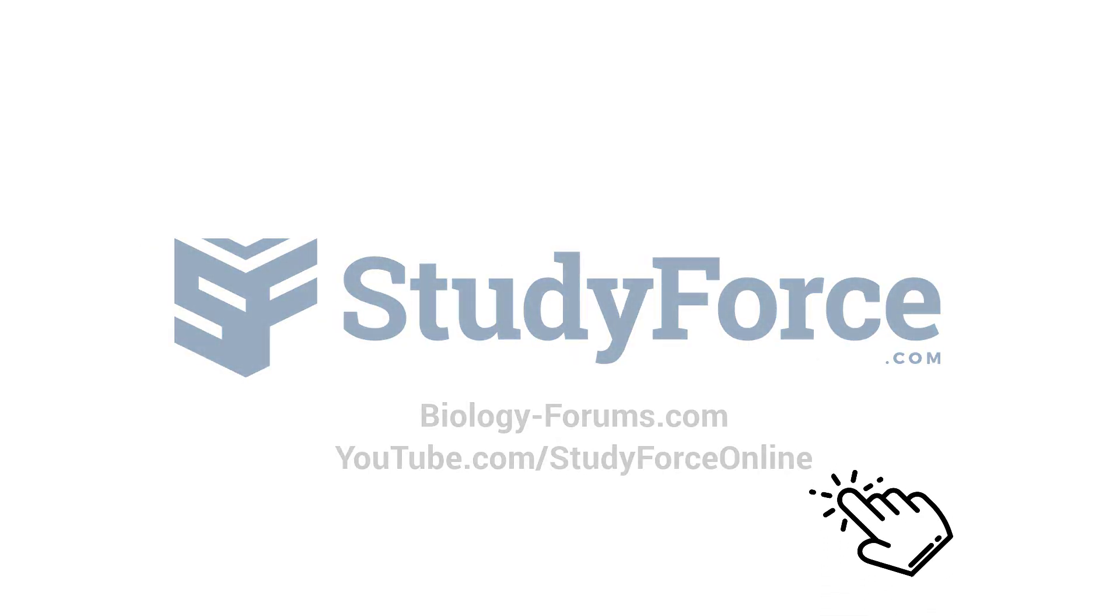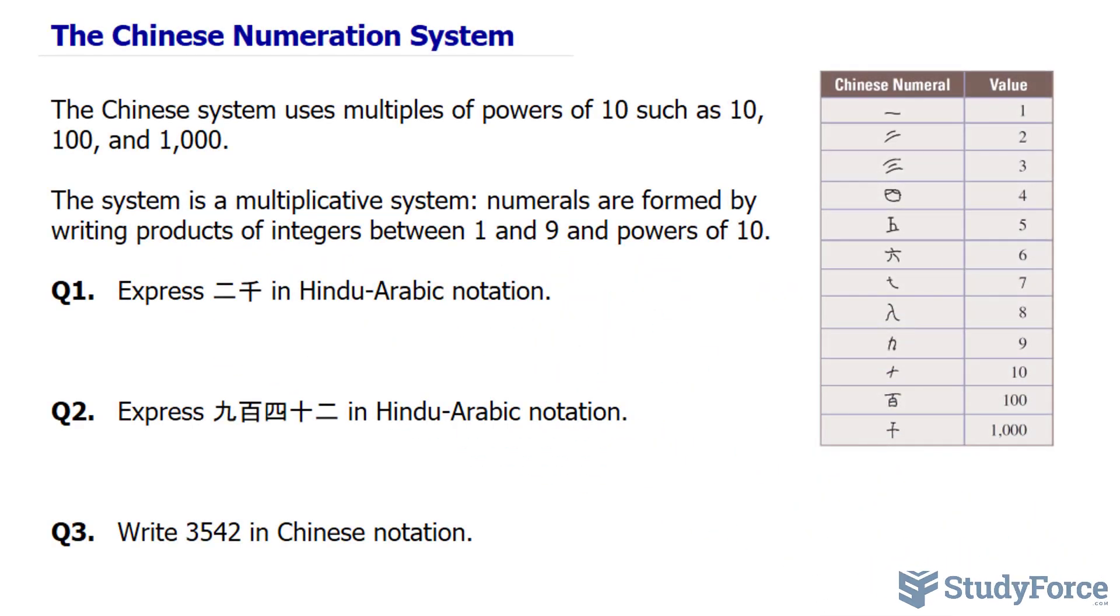In this quick tutorial, we'll discuss the Chinese numeration system. The Chinese system uses multiples of powers of 10 such as 10, 100, and 1,000.